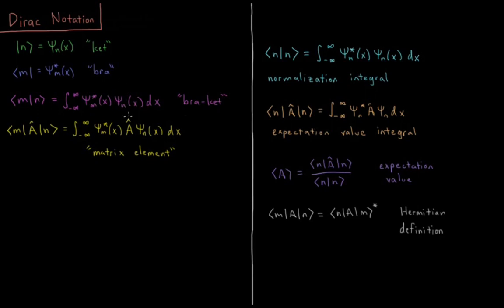So in one dimension, this is integration over all of x. If these were three-dimensional functions, this would be a three-dimensional integral. It's integrating over all space for whatever the dimensions of your particular wave function are. So that would be a bra ket or an overlap integral.